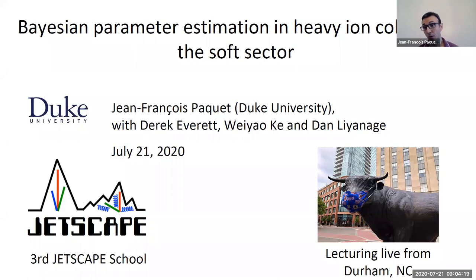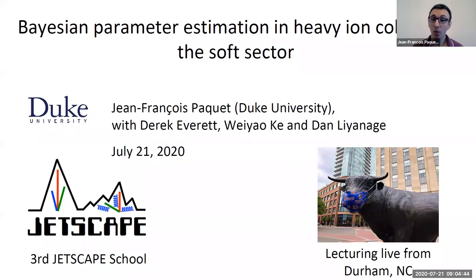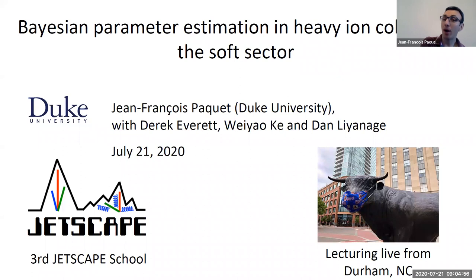You've learned how to describe the evolution of the quark-gluon plasma with hydrodynamics using the MUSIC hydrodynamics code, from Dima about hadronic transport with SMASH, and from Goiko and Yasuki about how Jetscape describes the production of hard partons in heavy-ion collisions and how these partons interact with and lose energy to the medium. Today's lecture is about what you do once you have your model and can produce observables to compare with experiments.